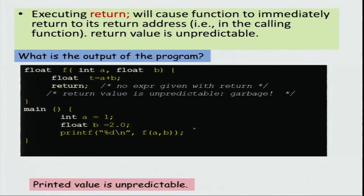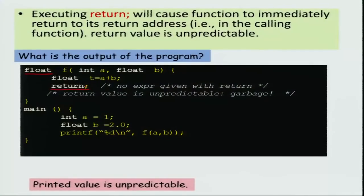Executing return will cause the function to immediately return to the return address. If you omit the return value, the return value is unpredictable. For example, if you are supposed to return a float value but just write return with no expression, the program will compile, but when you execute it, some unpredictable behavior may result. The printed value in this case cannot in general be predicted.